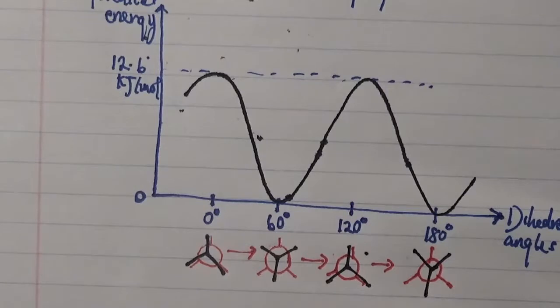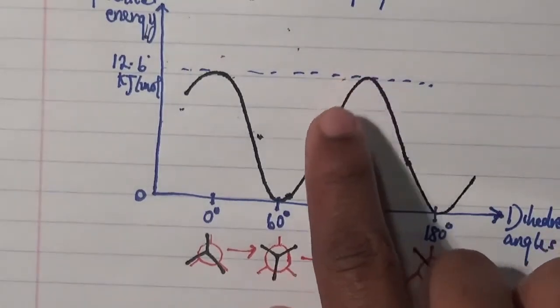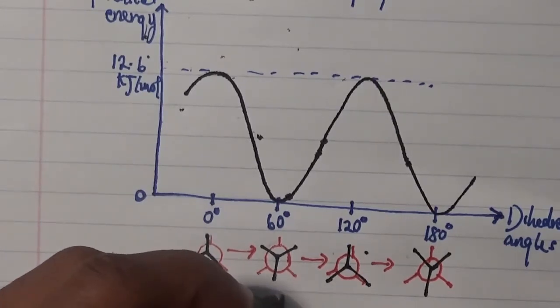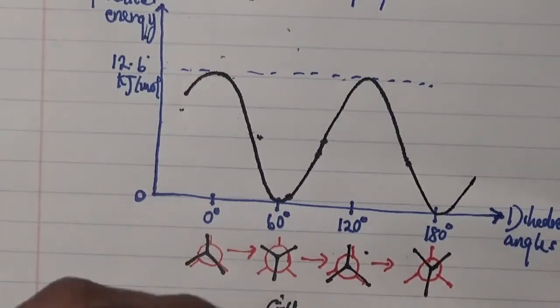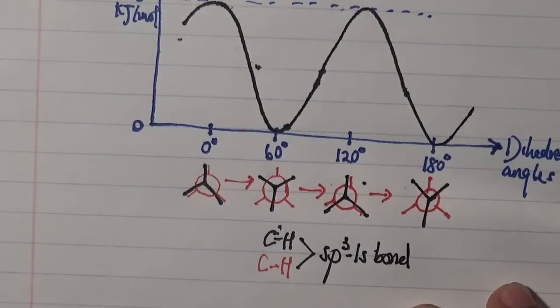What do we derive from this exercise is that we notice that as ethane rotates towards an eclipsed conformation, its potential energy increases. Now, the question is why this increase? We know that the increase is due to the electron density between the sp3-1s bond that exists between the C-H's of the front and the back. This electron density of the sp3-1s bond of both cases will require some energy of 12.6 kJ per mole to overcome the repulsive force.